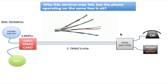Assuming that the modem is okay, the POT splitter is okay, and there are no metallic problems on the line or problems with the high-speed card — so assuming everything is fine with the line, your phone is working fine but your internet is not, and you're trying to figure this out.